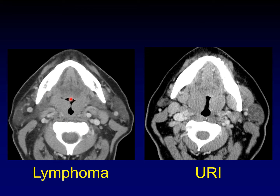This patient has lymphoma involving Waldeyer's ring. This patient has an upper respiratory infection that's going to get better all on its own. There is no way to tell these apart — they look identical.